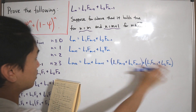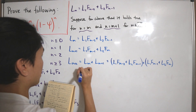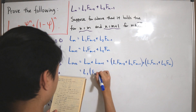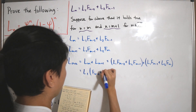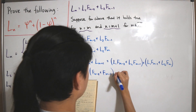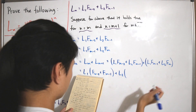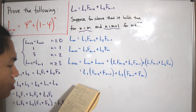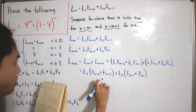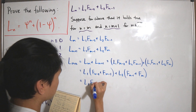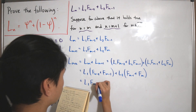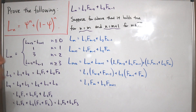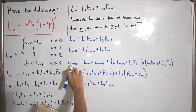Factoring out L_1 and L_2 from the combined expression: L_{m+2} = L_1 · (F_{m-2} + F_{m-1}) + L_2 · (F_{m-1} + F_m). By the Fibonacci definition, F_{m-2} + F_{m-1} = F_m and F_{m-1} + F_m = F_{m+1}, so L_{m+2} = L_1 · F_m + L_2 · F_{m+1}, exactly as required.